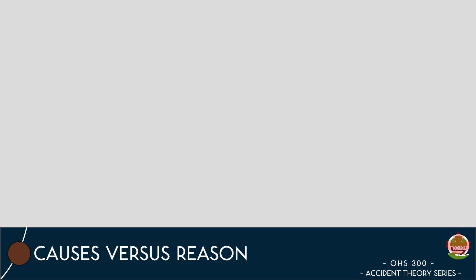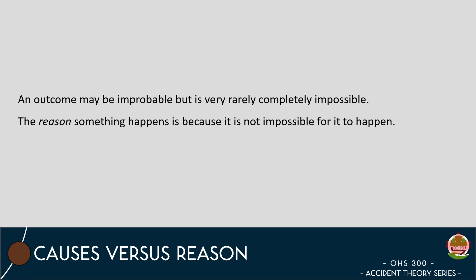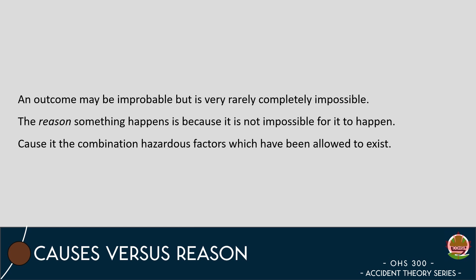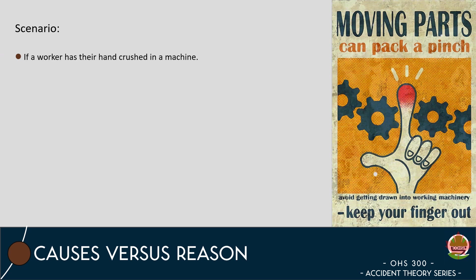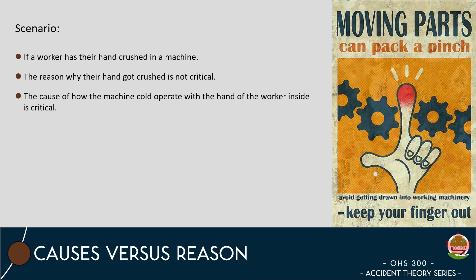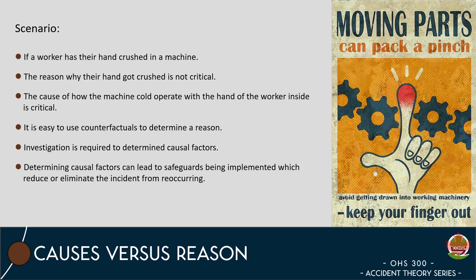The true reason for an outcome occurring is that the outcome was bound to happen because outcomes are sometimes improbable, but are very rarely completely impossible. Therefore, we can say that the reason the outcome took place is simply because the outcome could occur, but the actual cause is a combination of hazardous factors that have been allowed to exist within the system of safeguards that have been put in place. If a worker in a factory was using a machine and the worker's hand was crushed by the machine, it is not necessarily critical to place reason on why the hand of the worker was crushed. Rather, it is important to determine the cause of why the machine was able to operate while the hand of the worker was in a part of the machine where injury could occur. It is easy to use counterfactuals and hindsight to determine some sort of reason as to why an incident took place, but in-depth investigation is required to conclude the causal factors that lead to an incident taking place, and providing insight on how safeguards can be used to reduce or eliminate the incident from happening in the future.